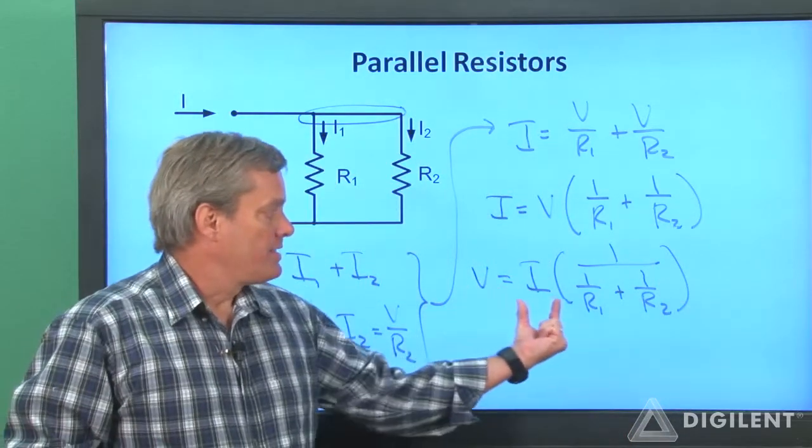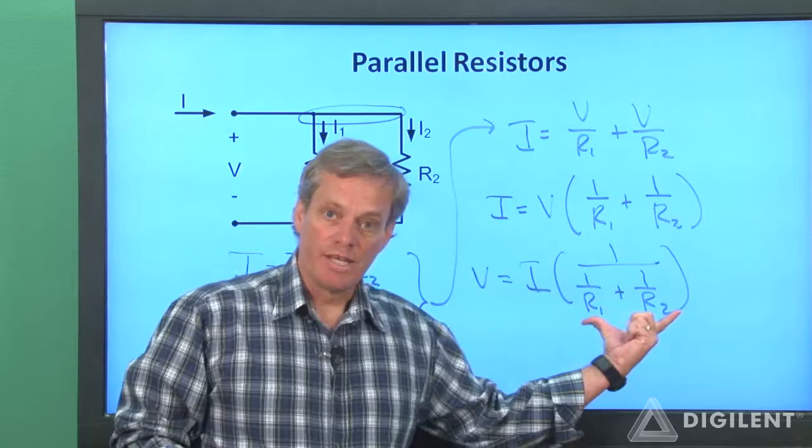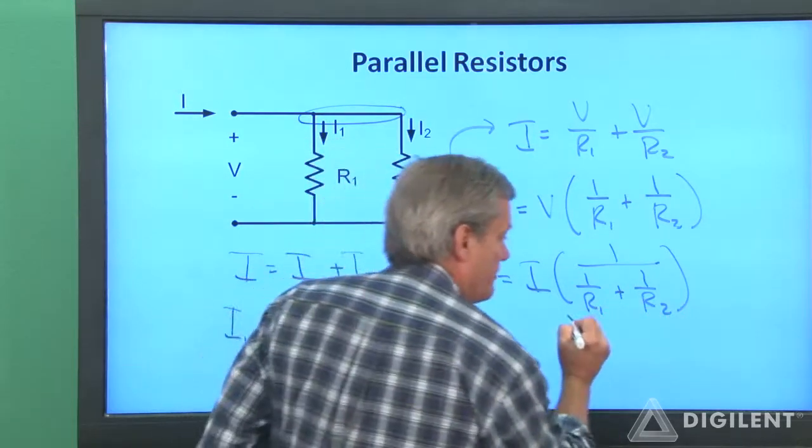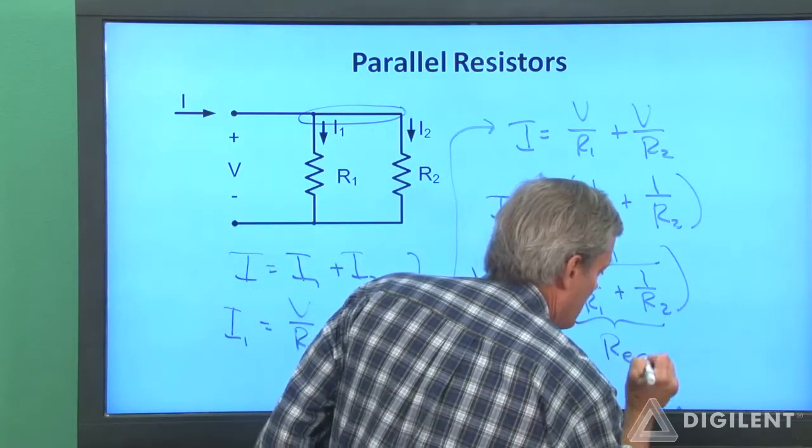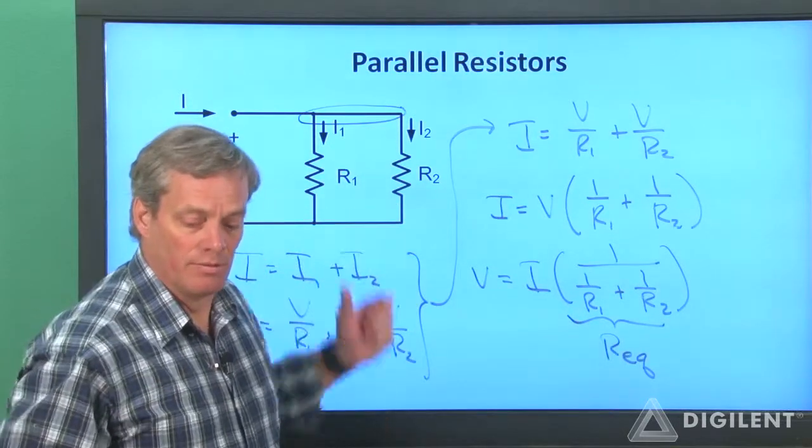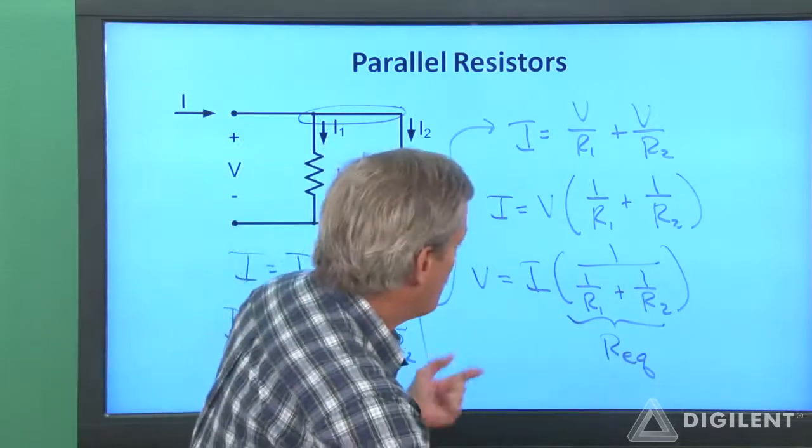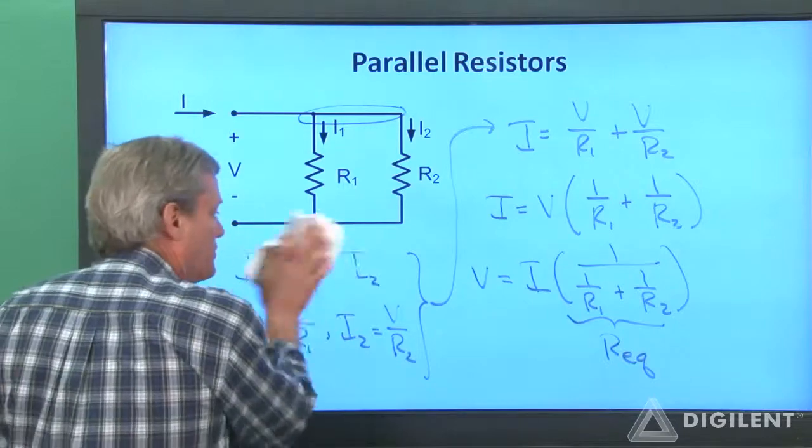This is now in the form of V is equal to I times some resistance. This is the equivalent resistance of this pair of resistors. Now it's common to rewrite this in an alternate form.